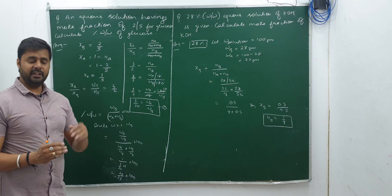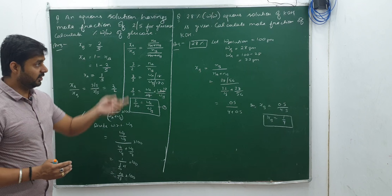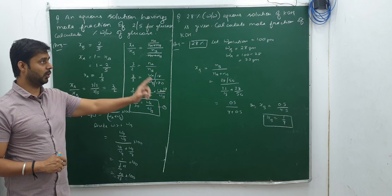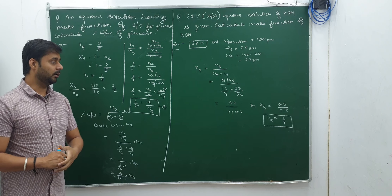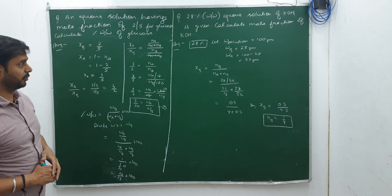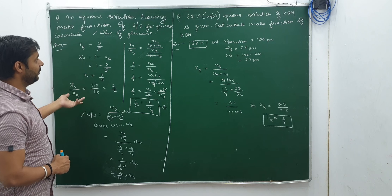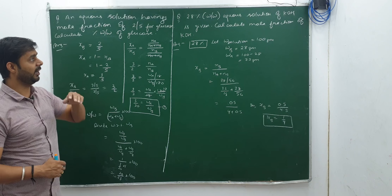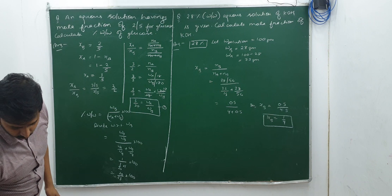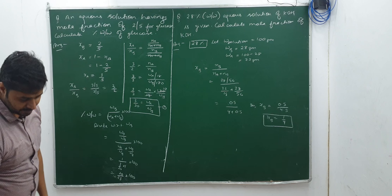In the first question we were given values to use directly. In the second question, we were given mass percentage and solved for mole fraction. In the third question, we were given mole fraction and calculated mass percentage. I am thinking you are getting my points.